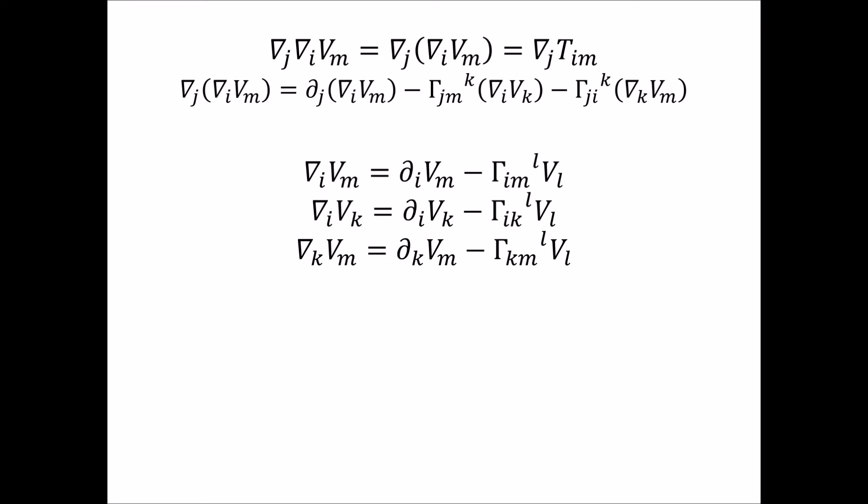I've introduced this new index L so the contraction index L here is just a different index from K so we don't get confused when we plug all this back in, which is what we're about to do. We're going to plug these three terms back into the parentheses up in the second equation here so we can see how it expands out and what we have. So this is what we have, we now have this second covariant derivative expressed in terms of all the covariant derivatives on the I index.